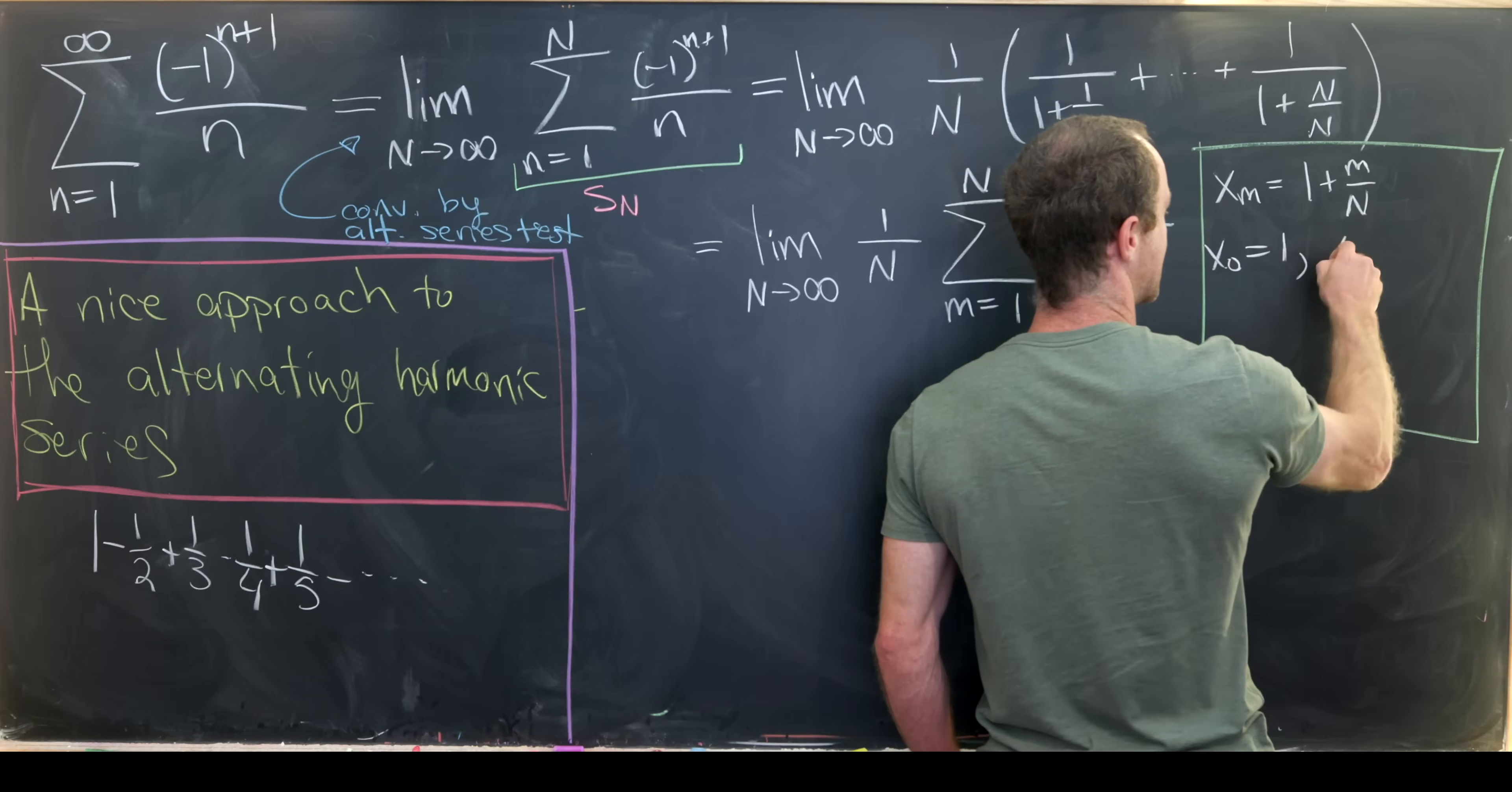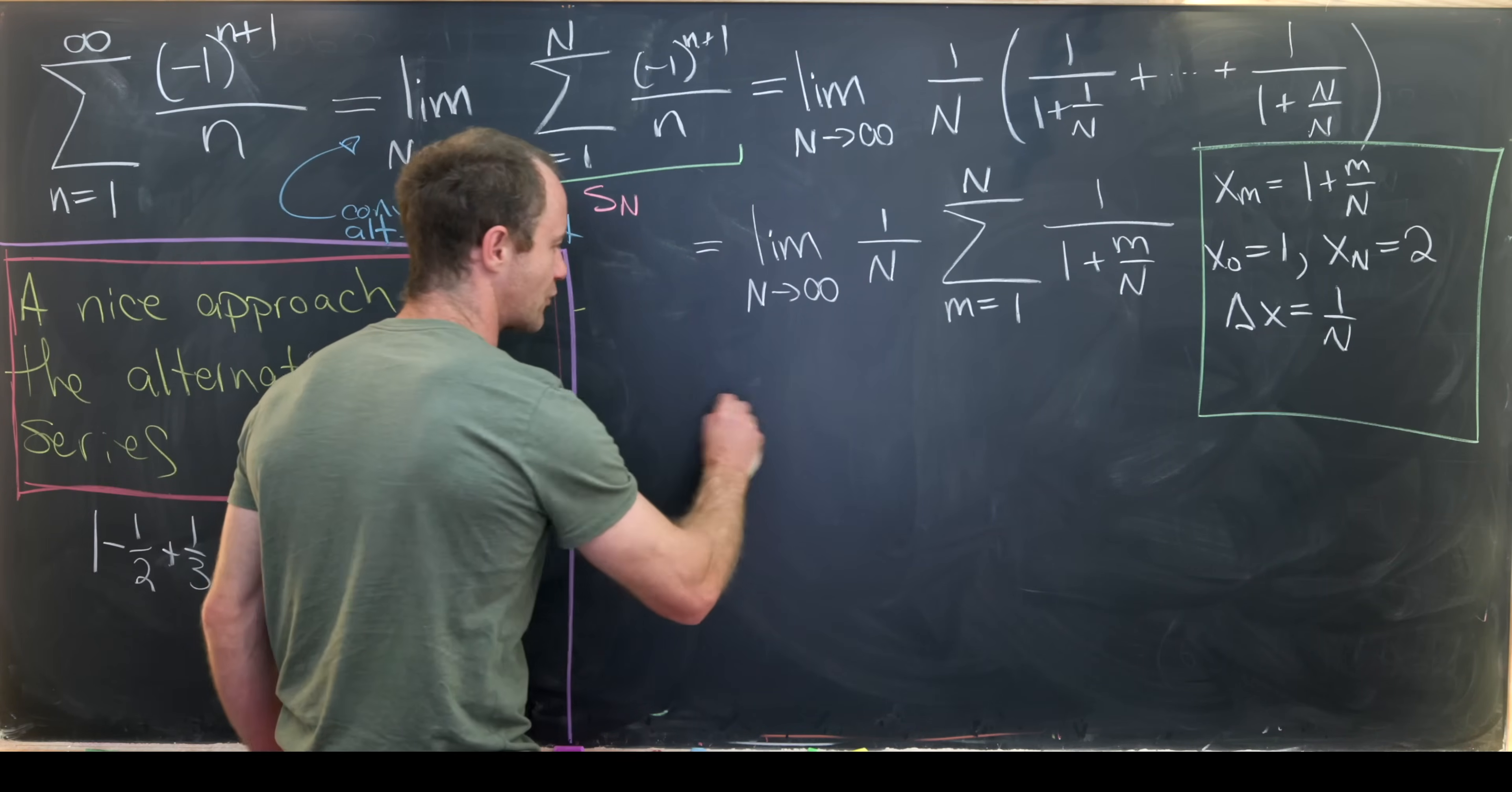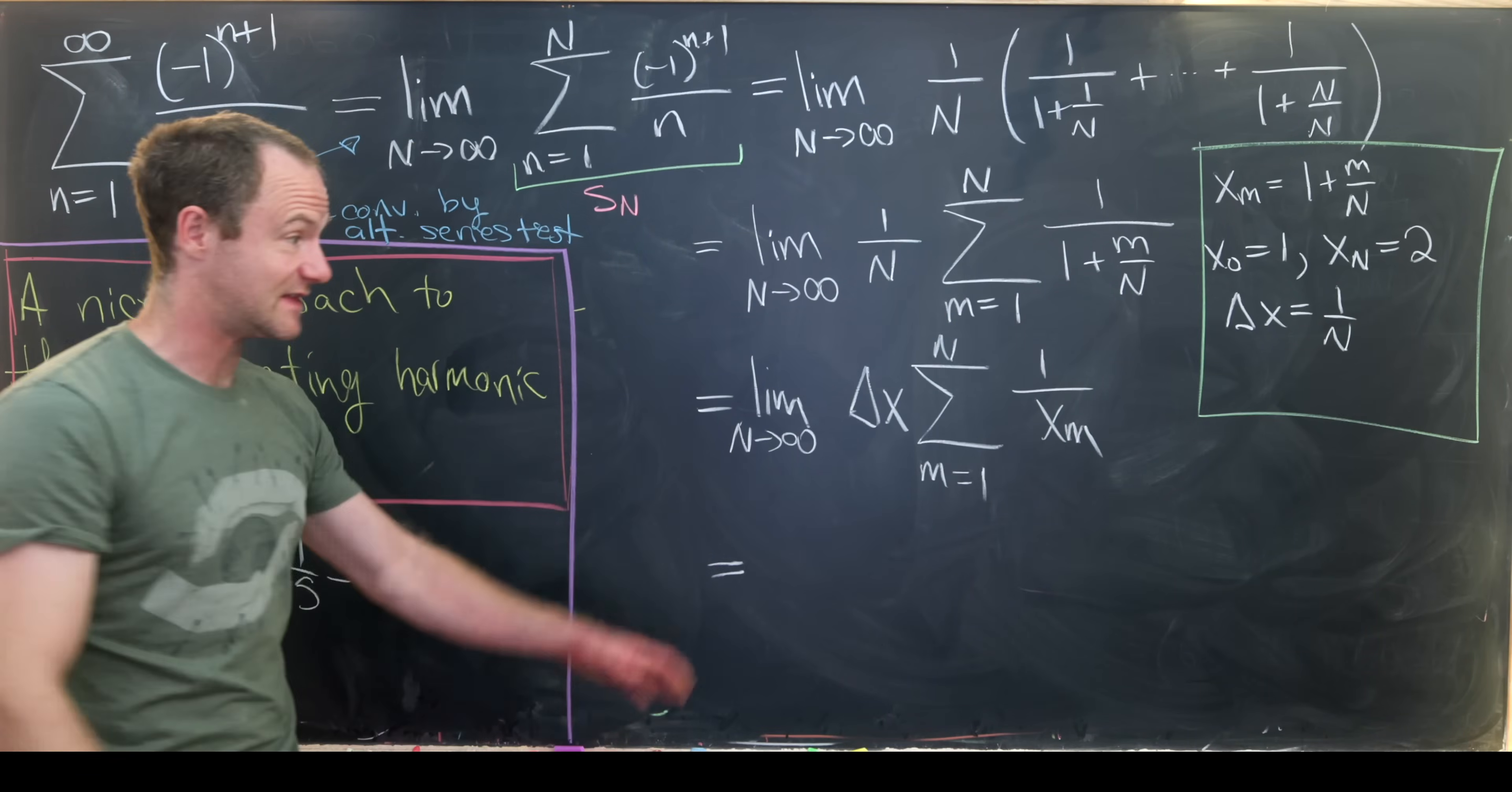So let's maybe say that X sub M is equal to 1 plus M over capital N. So that means that X sub 0 is 1 and X sub capital N is 2. And then let's set delta X to be equal to 1/N. And then we've got like a translation box over there that will translate this into a definite integral. Let's maybe write one more step first. This is the limit as capital N goes to infinity of delta X. That's this thing right here. And then the sum as M goes from 1 up to N of 1 over X sub M.